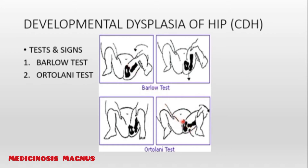In Barlow's test, the thigh that was abducted in Ortolani's test is now going to be adducted — bringing the thighs close to each other — which causes the femoral head to slip out. This is a dislocation test. Ortolani's test is called a reduction test because you are reducing the femoral head back into the acetabulum. A mnemonic: Barlow's test is the 'bad' test because it dislocates the hip by adducting the thigh.